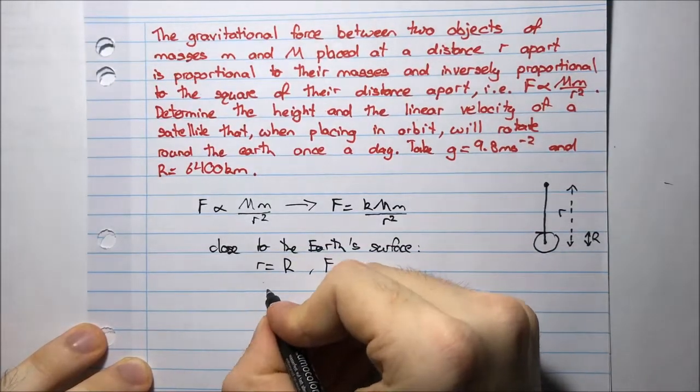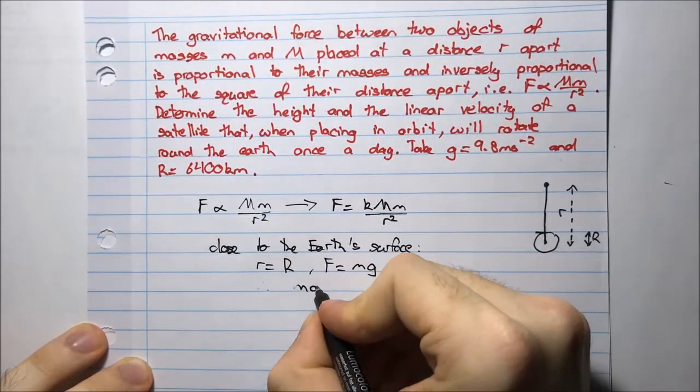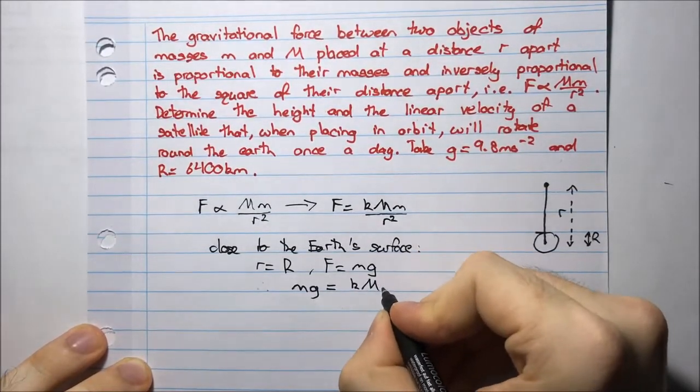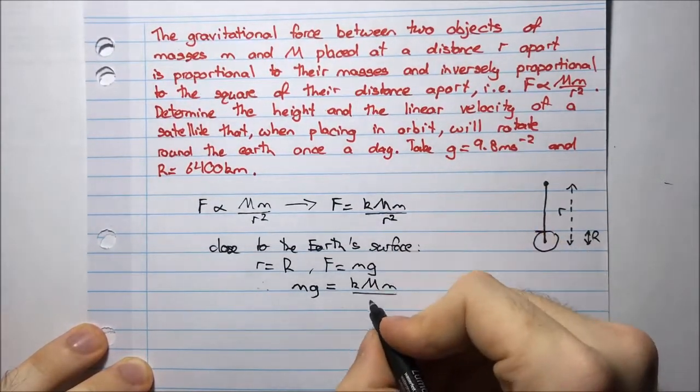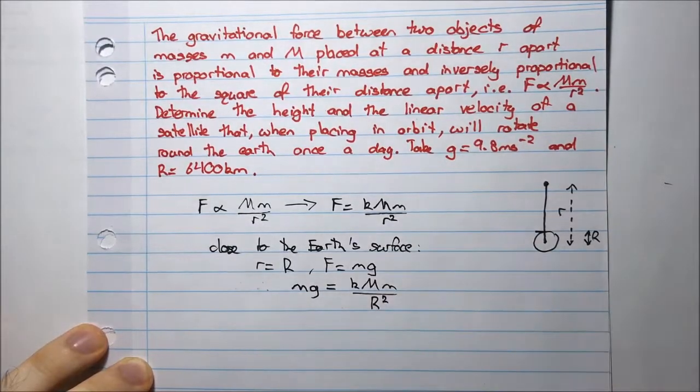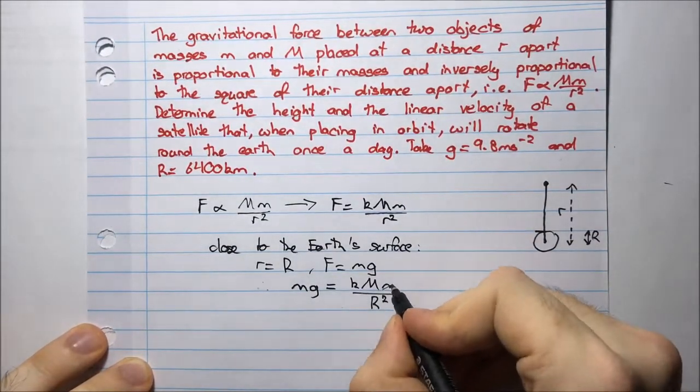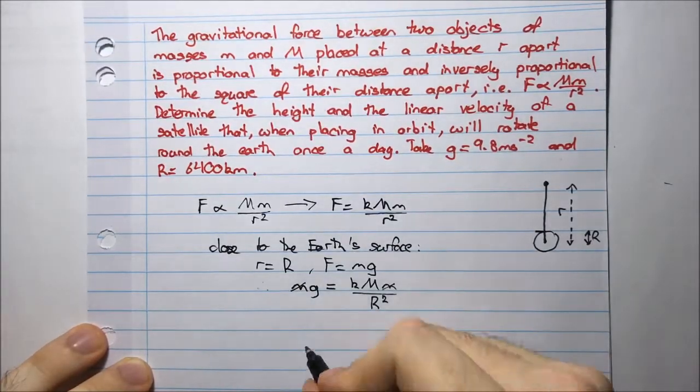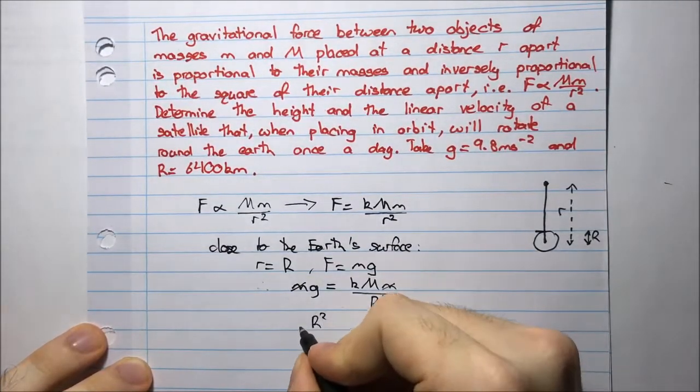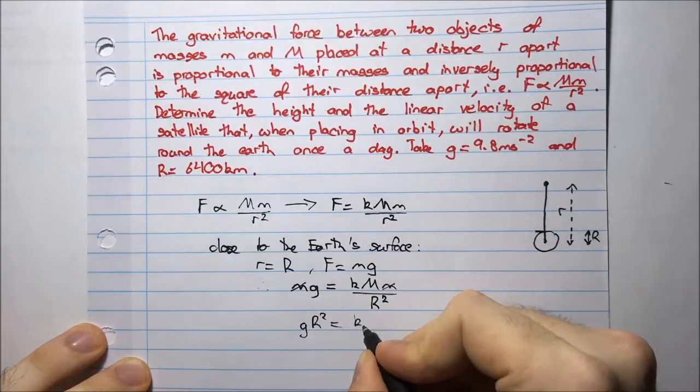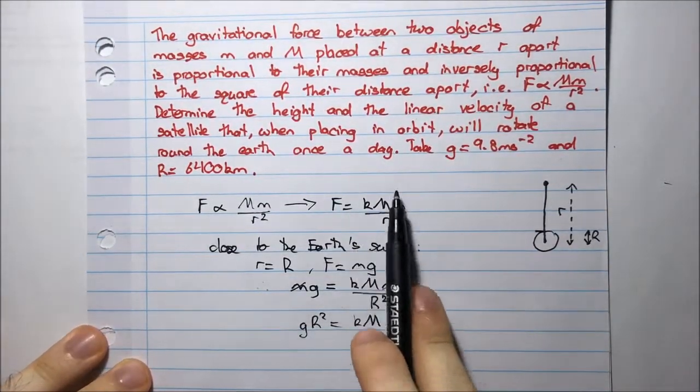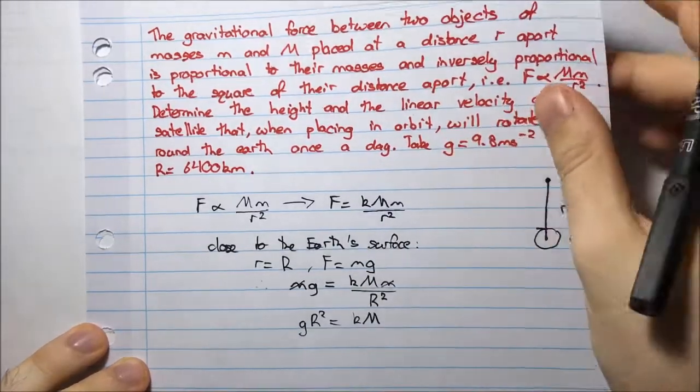So therefore, I can say that mg equals k capital M little m divided by R squared. Now I can cancel the little m. I can multiply by R squared, R squared g equals kM, and now I have an expression for k times capital M, which I can substitute into this formula here.